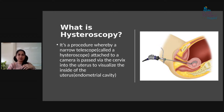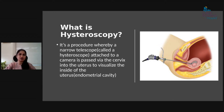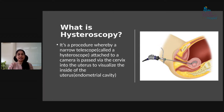There are two types of hysteroscopy: diagnostic hysteroscopy and operative hysteroscopy. Diagnostic hysteroscopy is used to see what is happening inside the uterus — to find conditions like polyps and fibroids. With operative hysteroscopy, whatever we see during the diagnostic phase, we have the chance to remove at the same time.